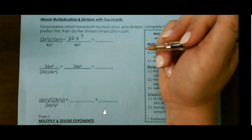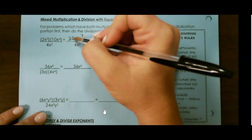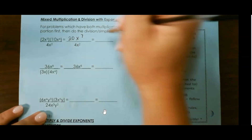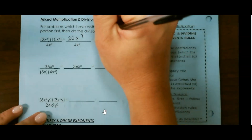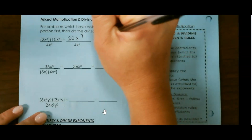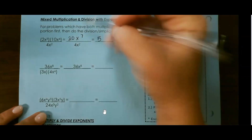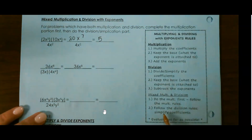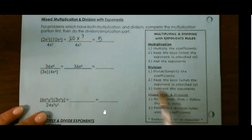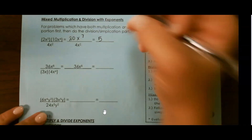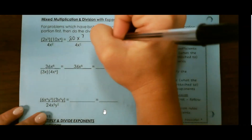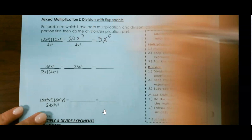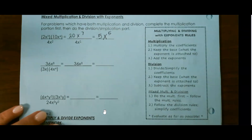Then we want to evaluate. So we can do 20 divided by 4, which is 5, and then x to the 7th and x to the 2nd. Remember, we want to subtract those exponents: 7 minus 2 equals 5. So that's 5x to the 5th power.